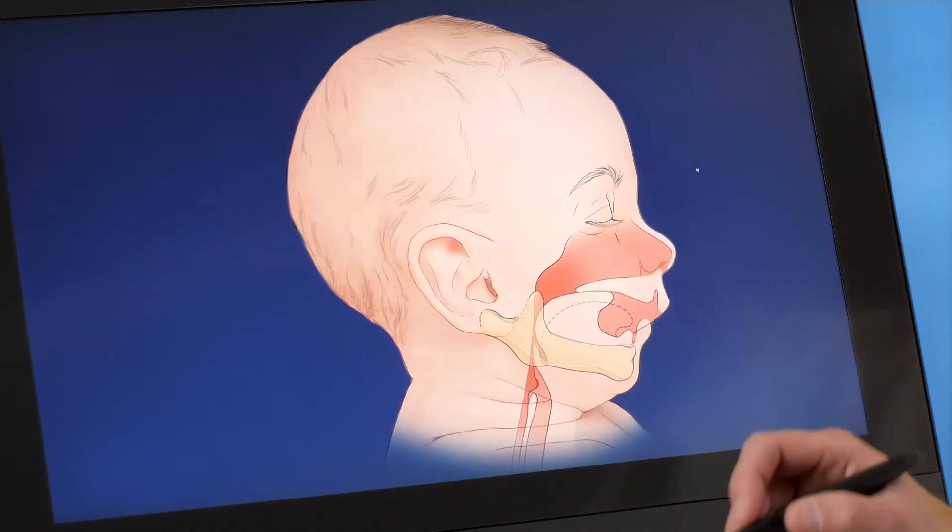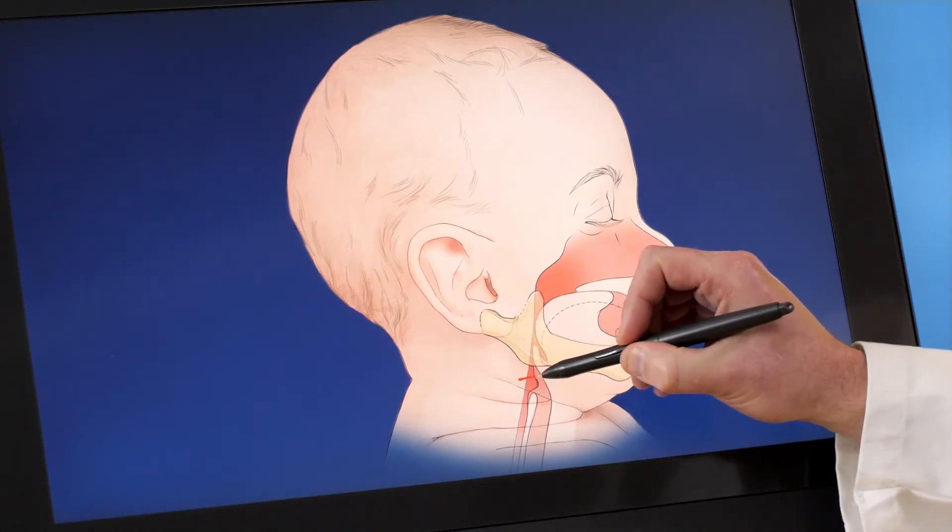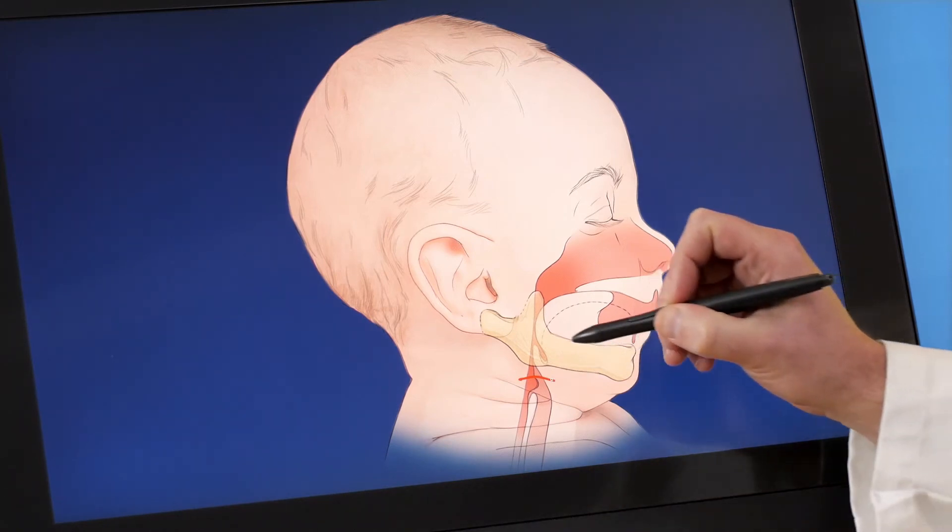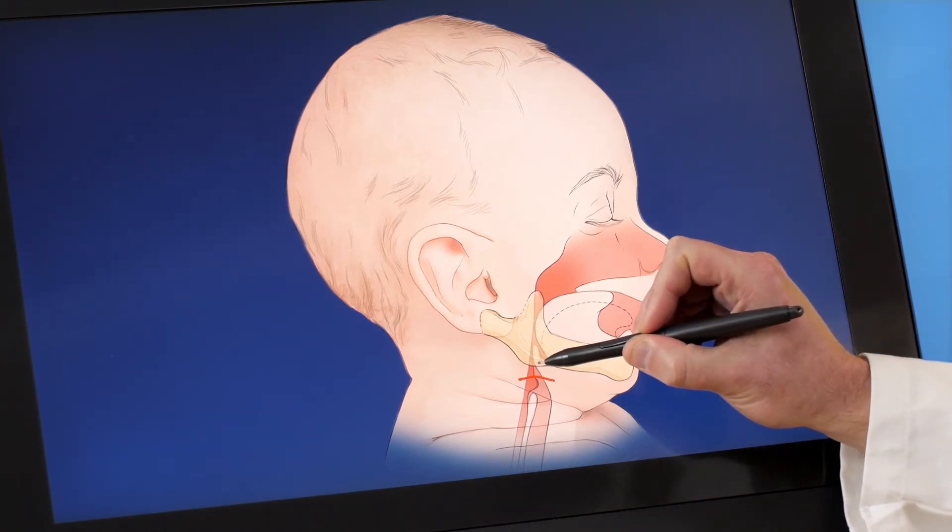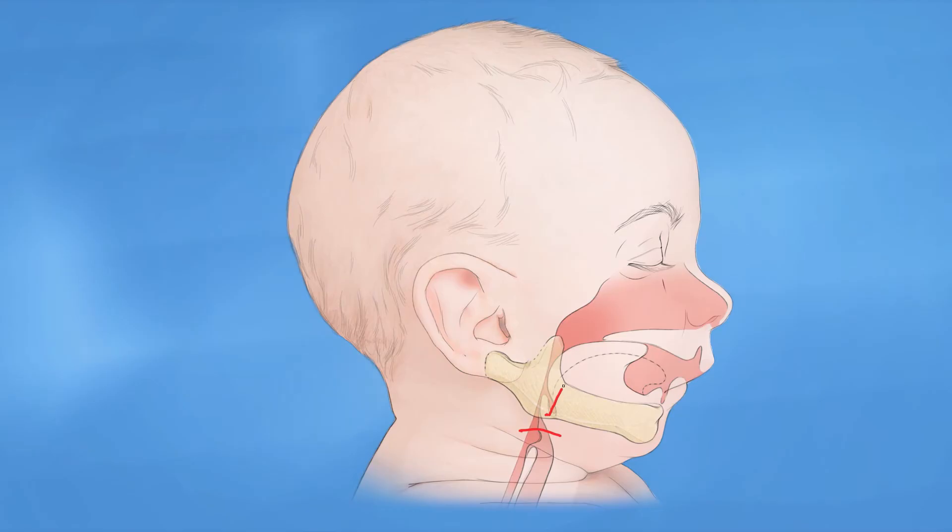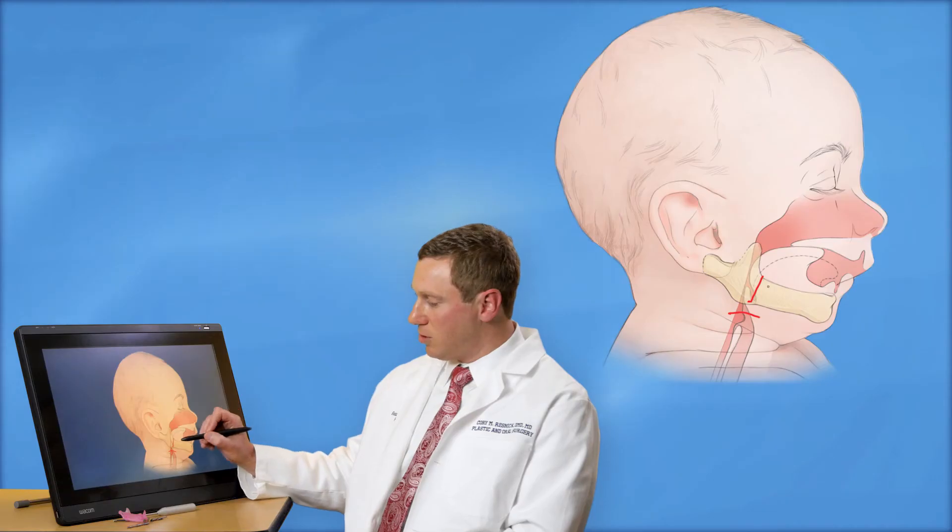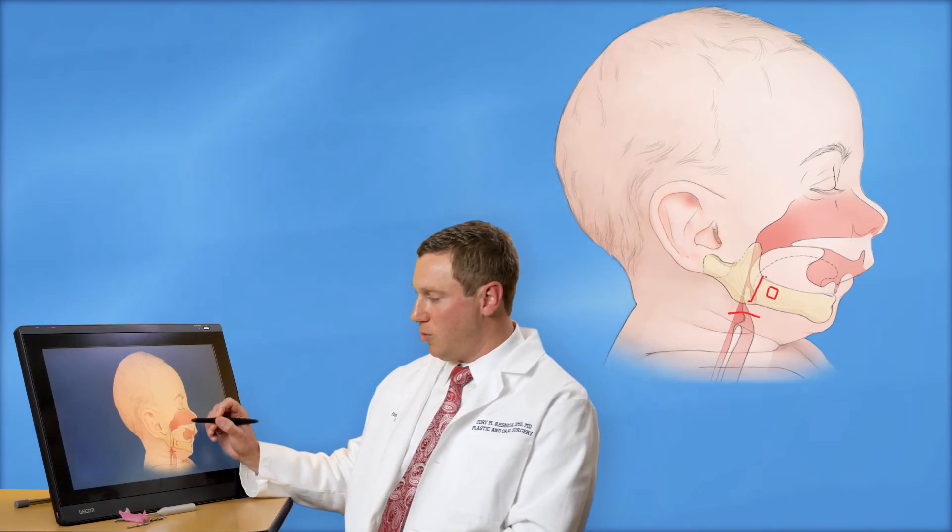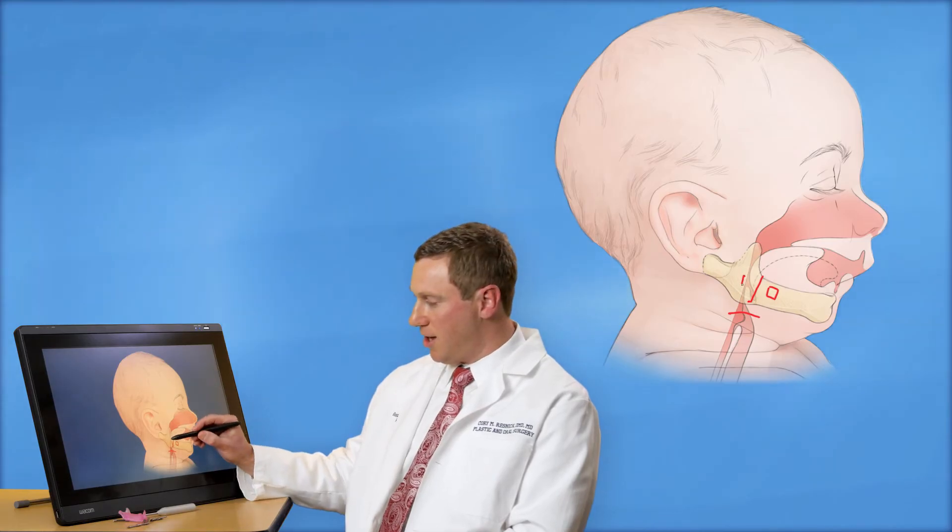In this operation, a small incision is made in a skin crease in the neck that allows access to the lower jaw. A bone cut is made with a special instrument and a corkscrew-like device is applied to the jaw with a bone plate in front and behind the bone cut.